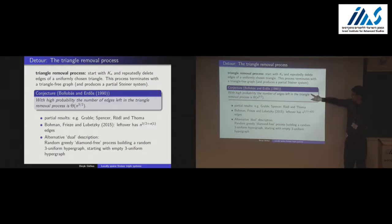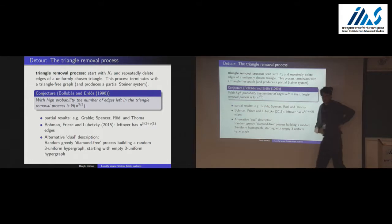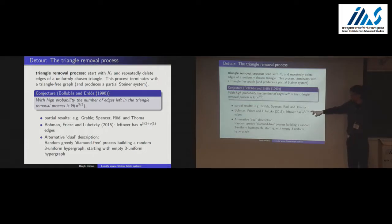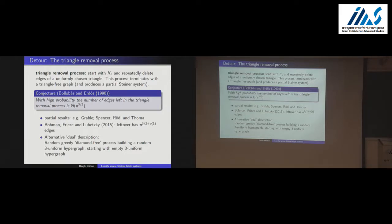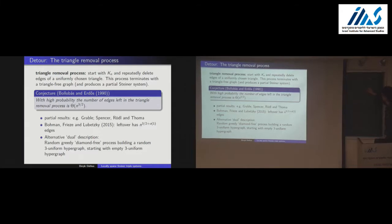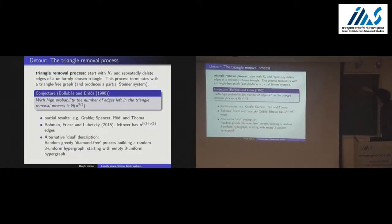They conjectured the process should end with N to the 3/2 uncovered edges, and there were many papers on this — the record is due to Bohman, Frieze and Lubetzky, who got almost the right exponent. An alternative dual description is a random greedy diamond-free process: starting with the empty 3-uniform hypergraph, you add triples as long as they're edge-disjoint and don't create a diamond.